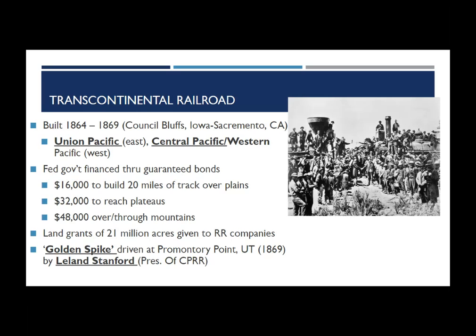The national government reimbursed companies as follows: $16,000 to build 20 miles of track over flat plains; $32,000 for an elevated line going up a significant elevation; and $48,000 for building through the mountains — much of what the Central Pacific built, largely using Chinese immigrant labor with specialized skills in mining and tunneling needed to get through the Sierra Nevada and Rocky Mountains. The railroad companies also received acreage on either side of the track — sometimes a few hundred yards, in other cases nearly a mile of real estate.